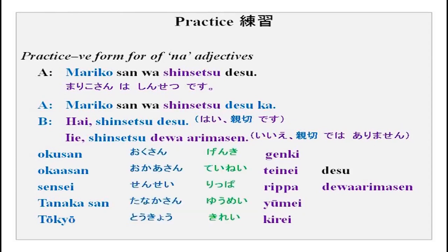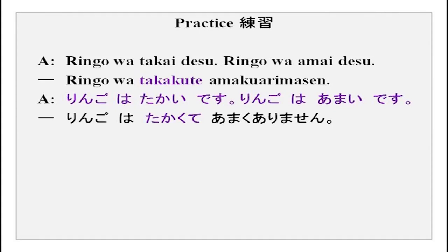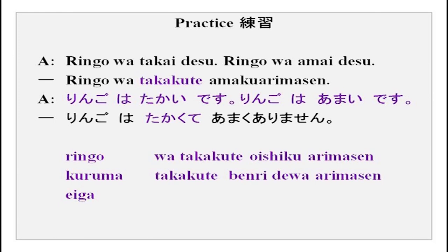This pattern we have done: Ringo wa takai desu. Ringo wa amai desu. How do you join two i-adjectives? With kute. Now: Ringo wa takai desu — Ringo wa amaku arimasen. We can join this negative here — it is takai and it is not even sweet. You can replace ringo with kuruma or eiga or any noun. Kuruma wa takakute benri dewa arimasen. Eiga wa nagakute tsumaranai desu — very long and not at all interesting.